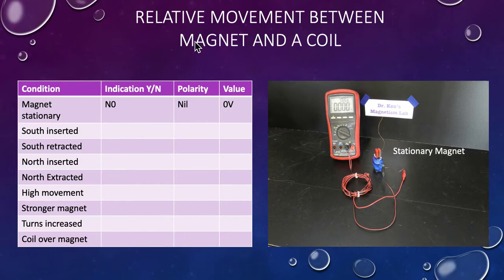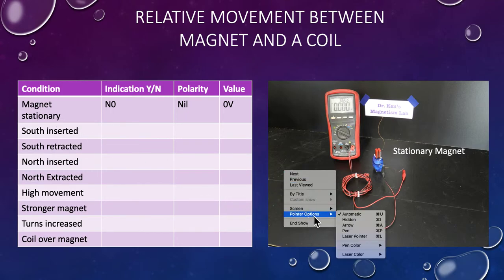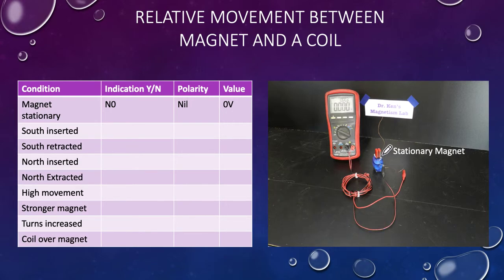So here's the practical. We're looking at the relative movement between a magnet and a coil. The first thing we're doing is the magnet is stationary. If you look in here at the moment, I've just got my magnets sitting in the coil and there is nothing on the display. So indication: no polarity, obviously nil value, zero volts.